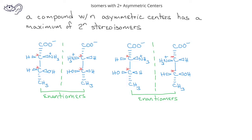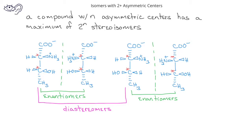However, how are molecules 1 and 3 related to each other? And how are molecules 2 and 4 related to each other? Since molecules 1 and 3 are not mirror images of each other, that means molecules 1 and 3 are diastereomers. Molecules 2 and 4 are also not mirror images of each other, so therefore molecules 2 and 4 are also diastereomers.